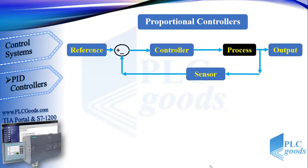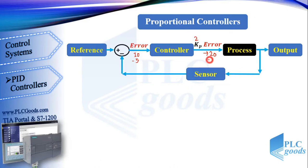Now let's see what proportional controllers are. This controller multiplies the error value by a number called kp. For example, if the error is 10 and kp is 2, the output will be 20. If the error is negative 5, the output of the controller will be minus 10. So the controller output is a number which has more than 2 states. Therefore, in order to use this controller, analog equipment must be used.